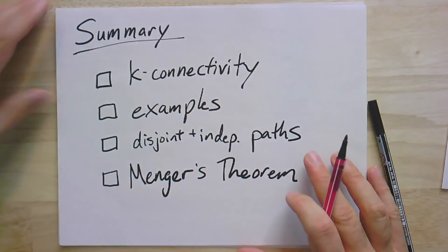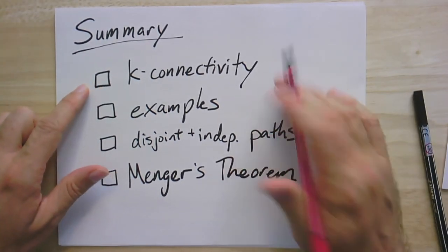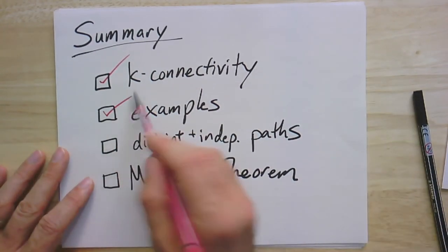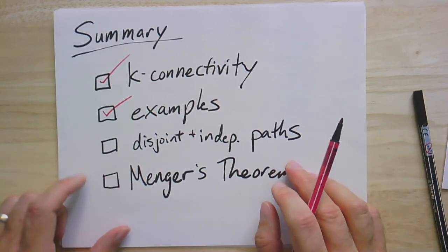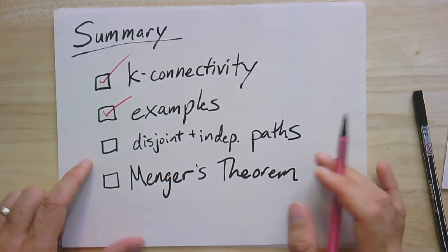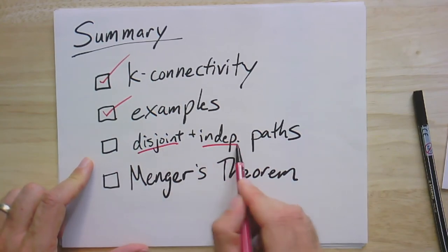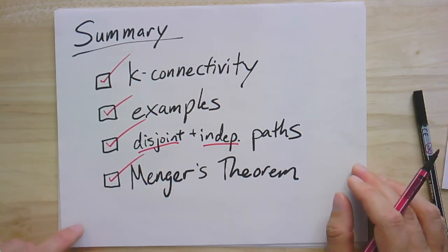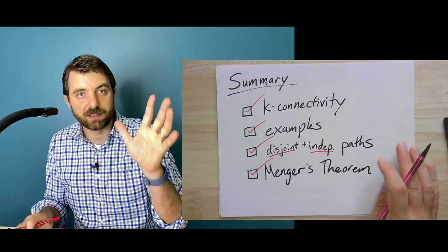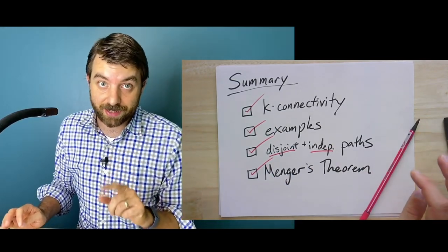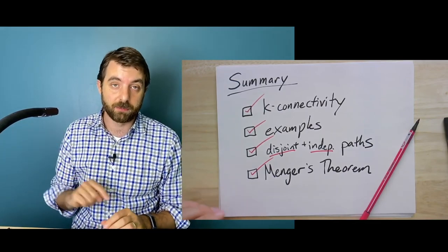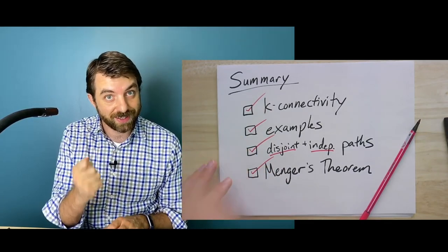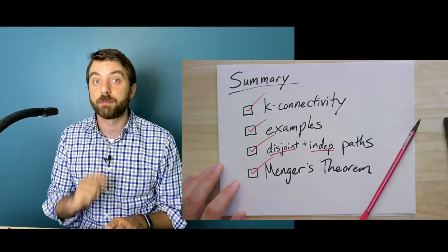To summarize these last two videos: we talked about k-connectivity, this robust version of connectivity, worked through examples mostly looking at two-connected things, and then looked at how k-connectivity guarantees the existence of certain kinds of paths — in particular disjoint or independent paths. This is encapsulated in Menger's theorem, which has this positive dimension: if a graph is k-connected, then you must have k independent paths between every pair of vertices. So if you need to find, prove, or guarantee the existence of some paths, Menger's theorem can do it for you.